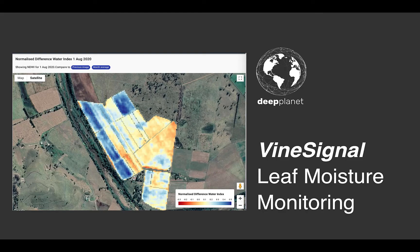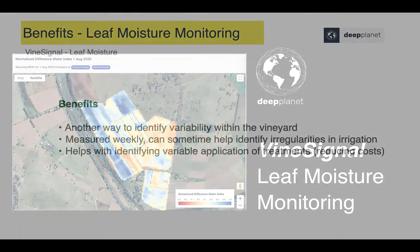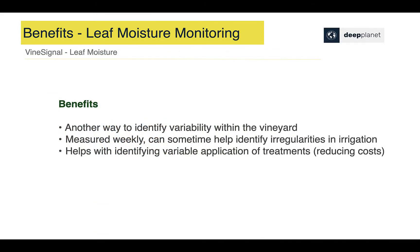Welcome to the overview of Vine Signals Leaf Moisture Monitoring. We understand that growers and viticulturalists are looking to reduce variability and achieve consistent quality and yield in the vineyard. Leaf moisture is another way to identify variability — it's measured weekly and can sometimes help identify irrigation irregularities in the vineyard.